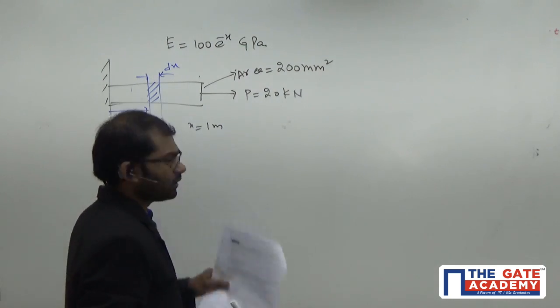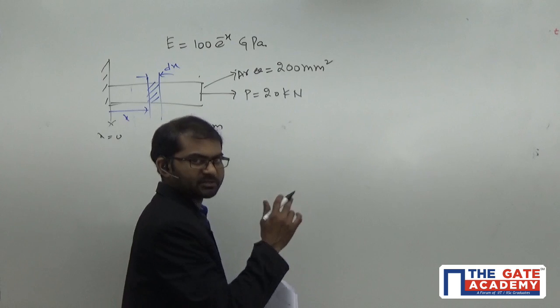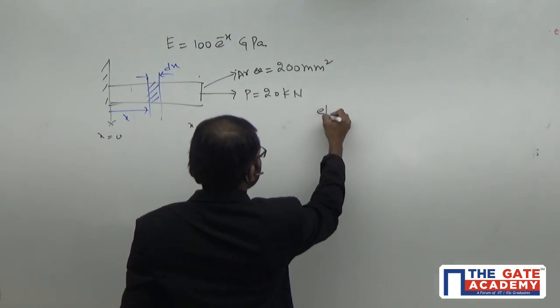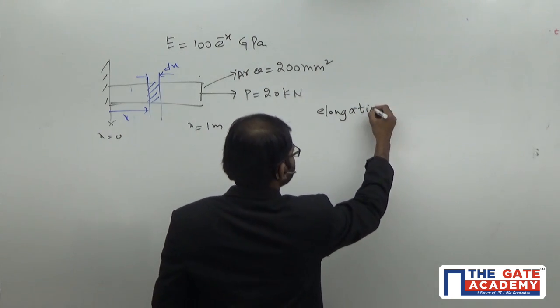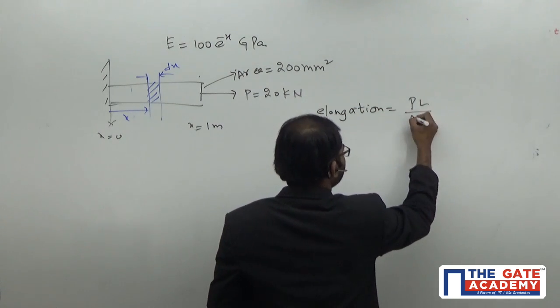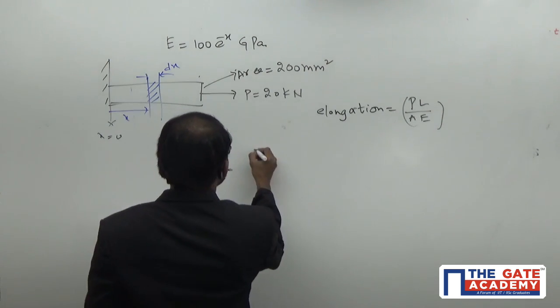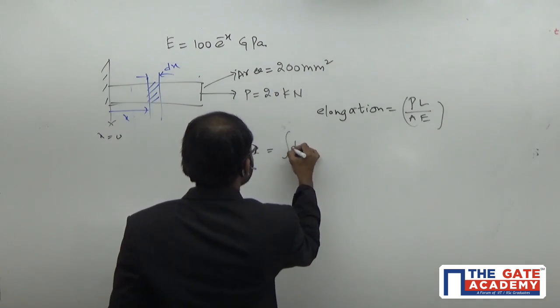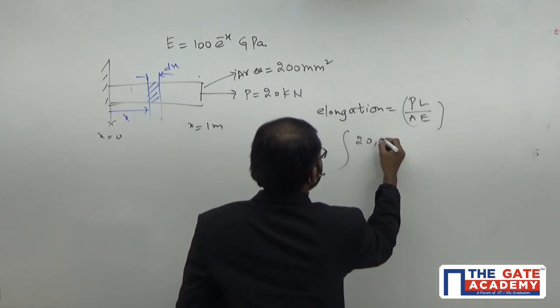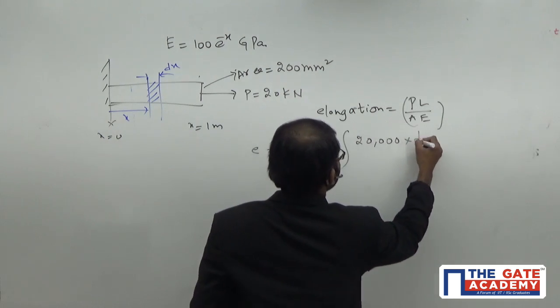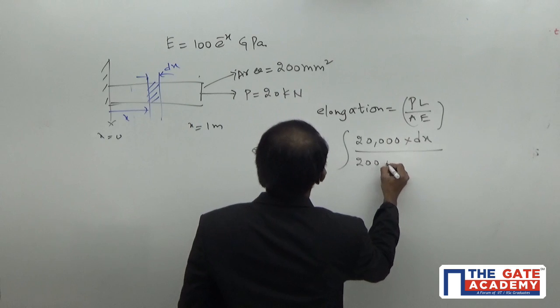If you take the elongation of this element, for any component that's a prismatic bar, elongation formula is equal to P L by A E. We'll use all these parameters here. So for this one, let's take the elongation dE here is equal to integral of P, 20,000, into dx by area.